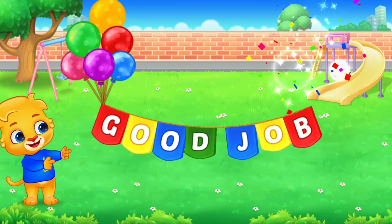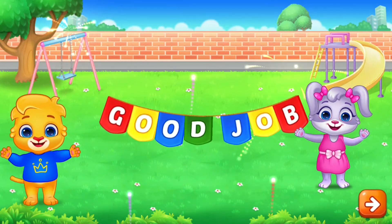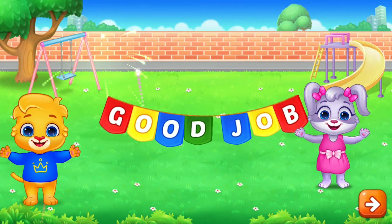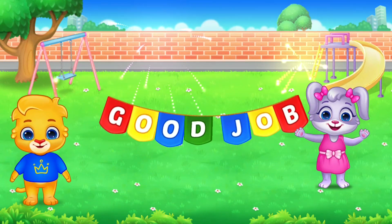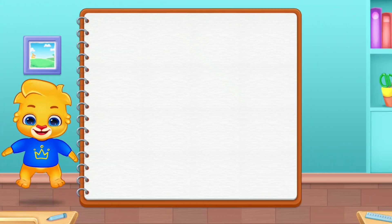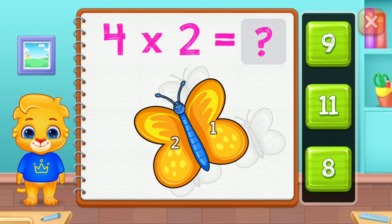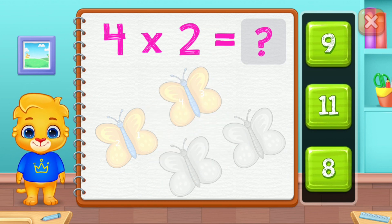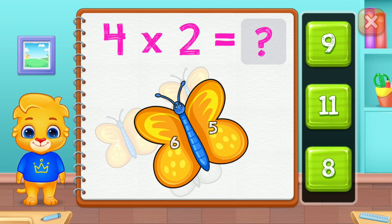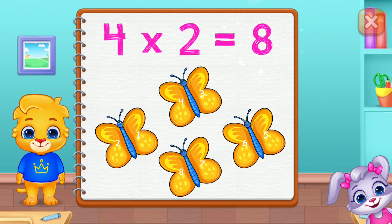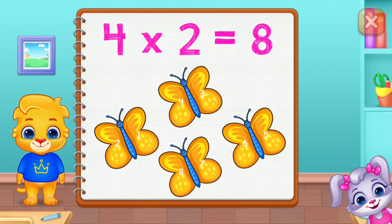Good job! One, two, three, four, five, six, seven, eight. Four groups of two equals eight.